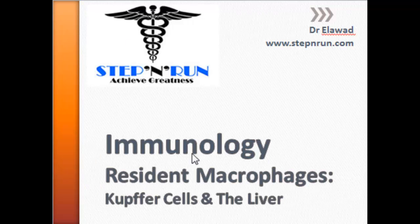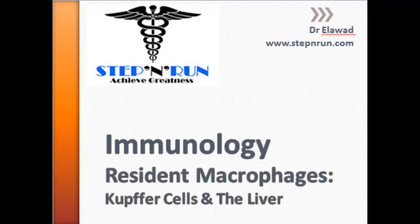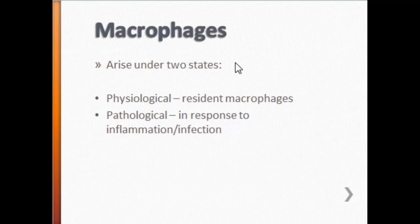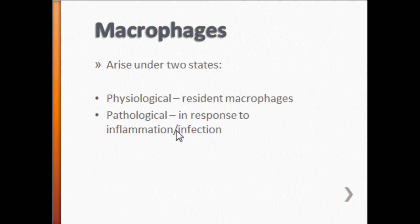Today we're going to be talking about resident macrophages — specifically Kupffer cells and their role in the liver. Remember that macrophages arise under two different states: the physiological state, which gives rise to your resident macrophages, and the pathological state, which gives rise to macrophages in response to inflammation and infection.